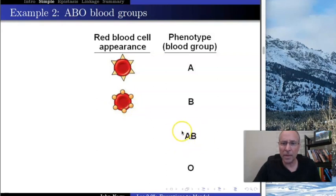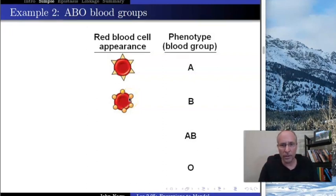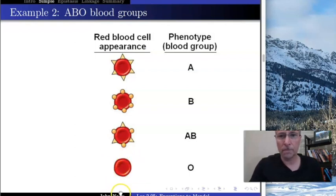If somebody is type AB, that's because they express both the triangles and the circles. They express both of these proteins. Somebody who's type O expresses neither of these proteins.